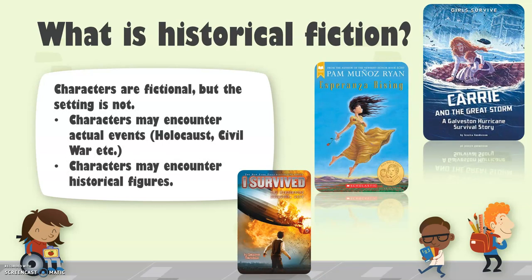So the characters are fictional, but the setting is not. For example, the little boy in the picture of I Survived is not real, but the Hindenburg was a real disaster that happened. Esperanza is not a real character, but she represents many people who really did exist during the migrant uprising in the 1920s and 1930s. Cary from the Great Storm of Galveston in 1900 is not a real person, but the Galveston Hurricane really did happen. They might encounter famous events like the Holocaust or the Civil War, but the characters themselves are not real.